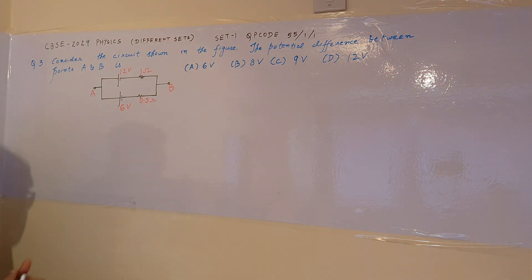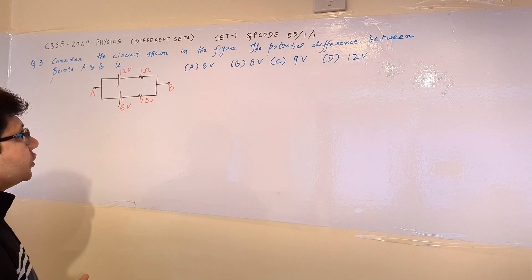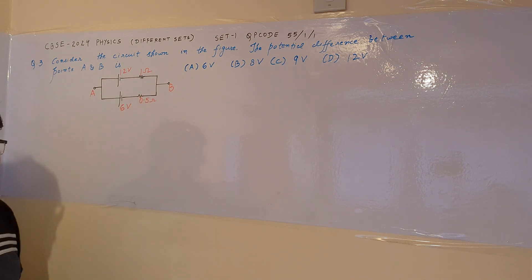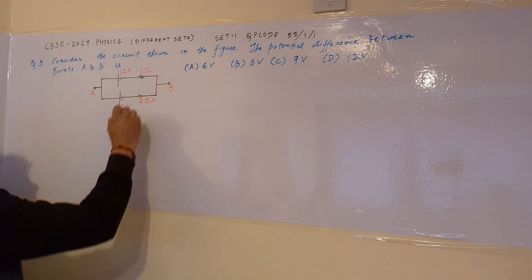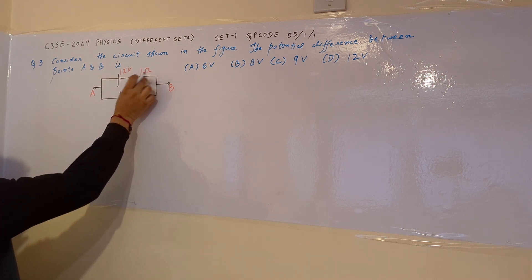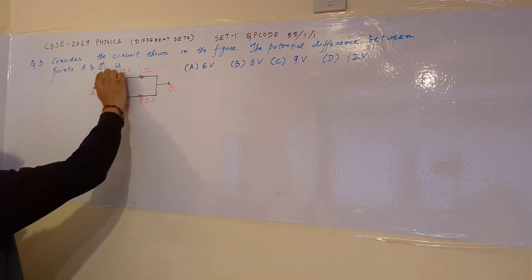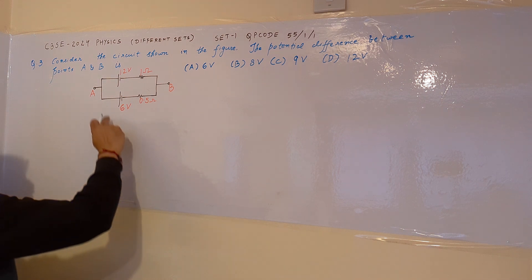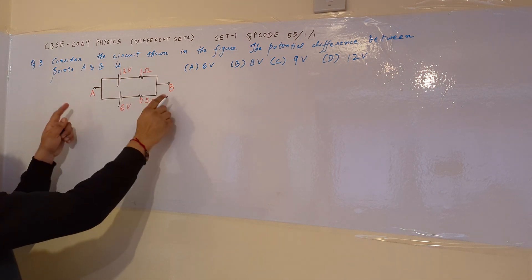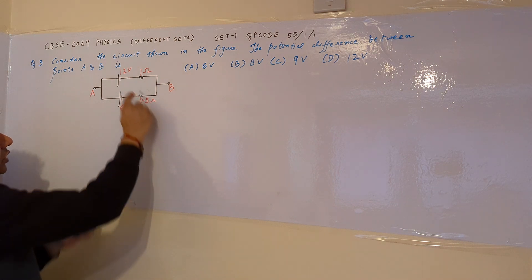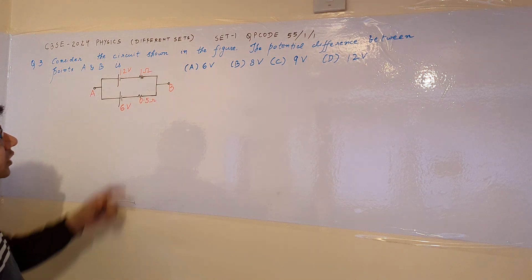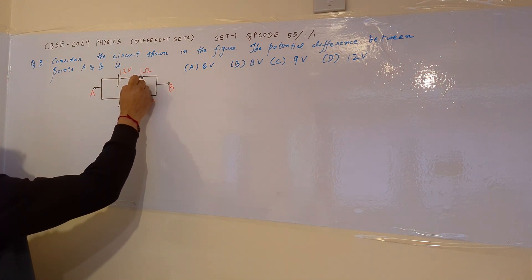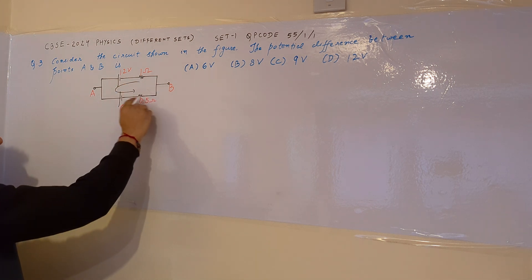We have to find out the potential difference between these two points. To calculate the potential difference between points A and B, we first need to calculate the potential difference across any resistor. If we calculate the potential difference across the 1 ohm resistor, we can use that to calculate VAB. To find the voltage across the resistor, we need to calculate the value of current flowing in it.